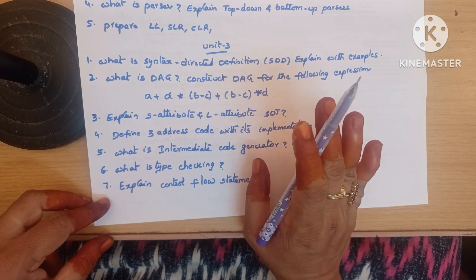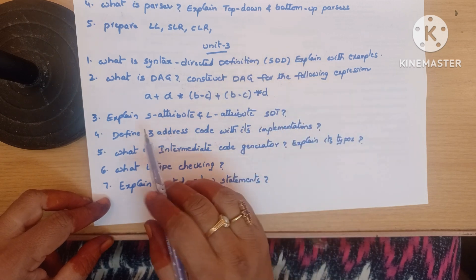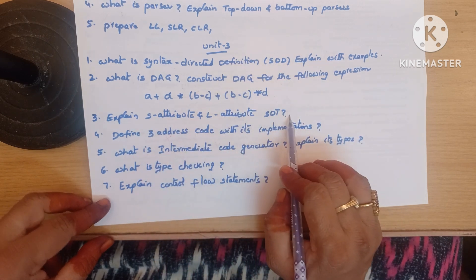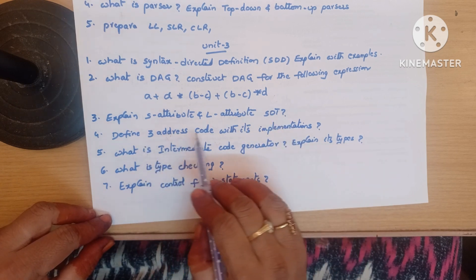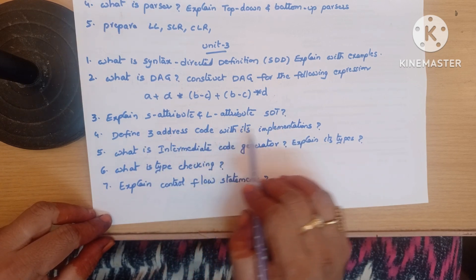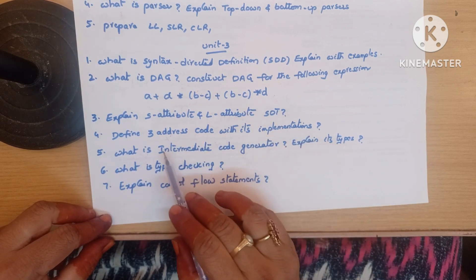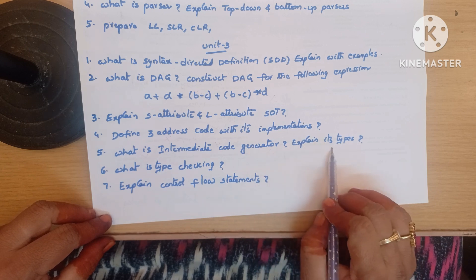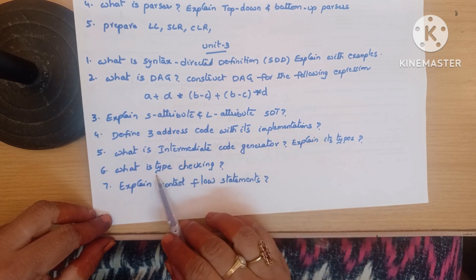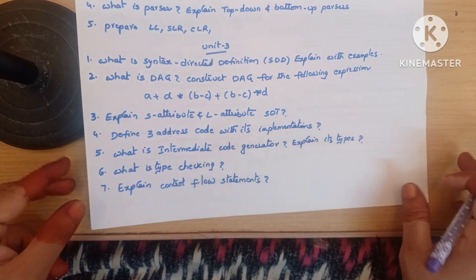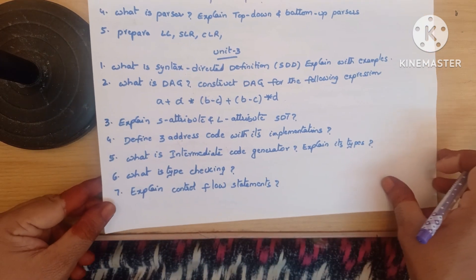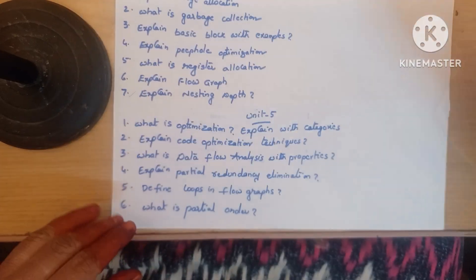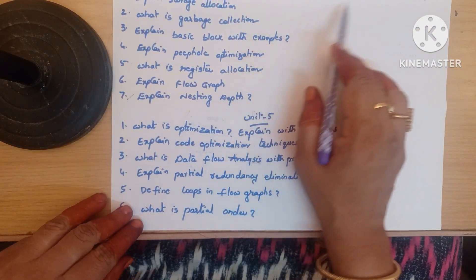Next: explain S-attribute and L-attribute SDT. Define three-address code with its implementations. What is intermediate code generator — explain its types. What is type checking. Explain control flow statements. These are the Unit 3 important long answer questions.